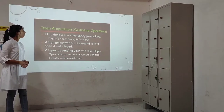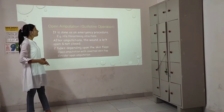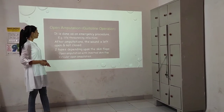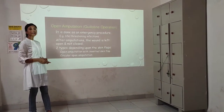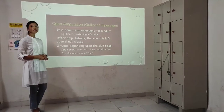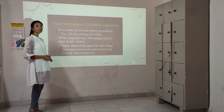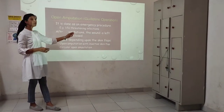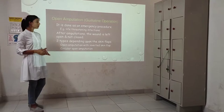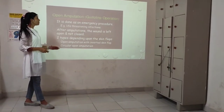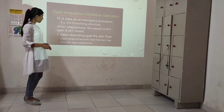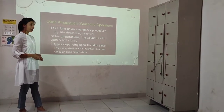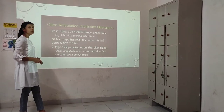Open amputation, also called guillotine operation, is done as an emergency procedure — for example, in life-threatening infections. After amputation, the wound is left open and not closed. There are two types depending upon the skin flaps: open amputation with inverted skin flap, and circular open amputation.